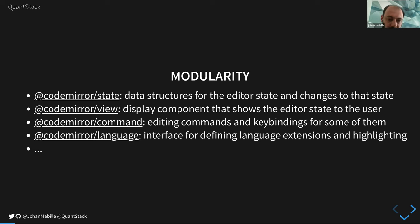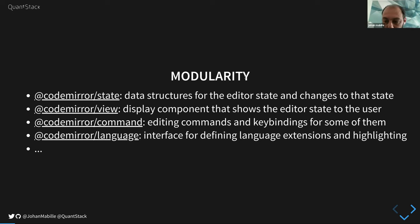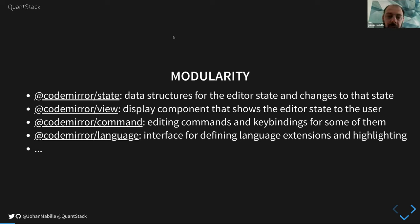The first big change in CodeMirror 6 is modularity. The package has been split into many packages. The main ones we use are: state, which provides data structures for the editor state and changes to that state; view, which is basically a display component that shows the editor state to the user; command, which is a list of editing commands and key bindings; and language, an interface for defining language extensions. With those four packages you can set up an editor with most features in JupyterLab.